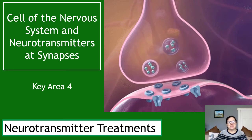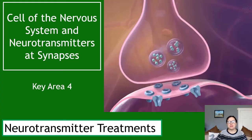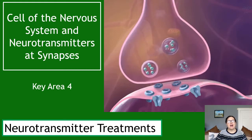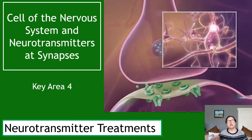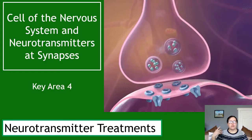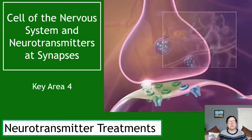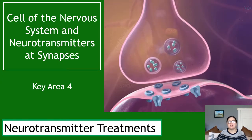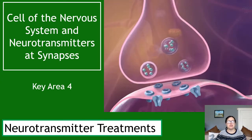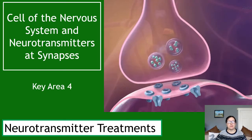We're on to video four of five of key area four, so we're in our final unit but almost halfway through it. This is going to be about neurotransmitter treatments. Important note: I will be using the word 'drug' in this video — when I say drug, I mean medicine effectively, because a drug is any substance that interferes with neurotransmitters.